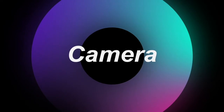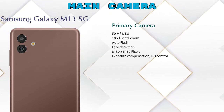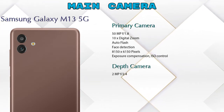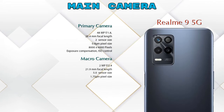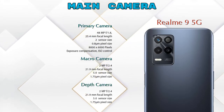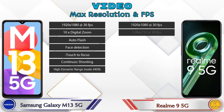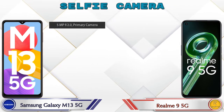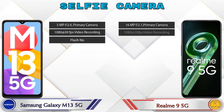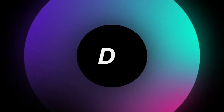Let's talk about cameras. For the rear camera, Galaxy M13 5G has two cameras — a primary camera and a depth camera. Realme 9 5G has three cameras — a primary camera, a macro camera, and a depth camera. For video recording, Galaxy M13 5G has 7 and Realme 9 5G has 8 different types of features available. Both phones have a single front selfie camera with three different features available.